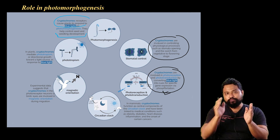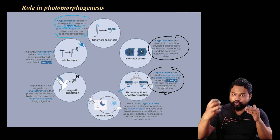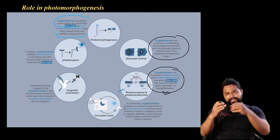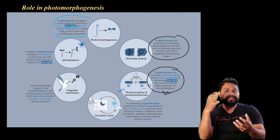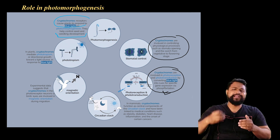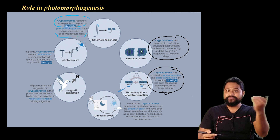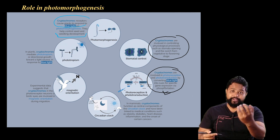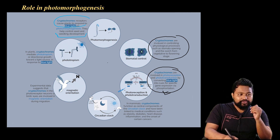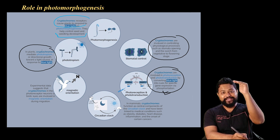When we control gene expression, the process is called photomorphogenesis. Blue light is absorbed and the signal is transduced to the nucleus, where it controls gene expression. The responses include seedling development, vegetative to flowering transition, stomatal movement, and phototropism.